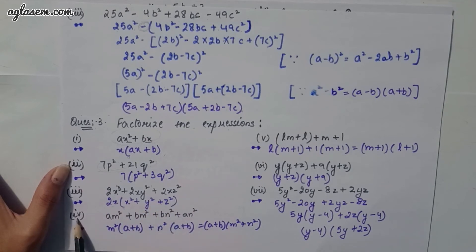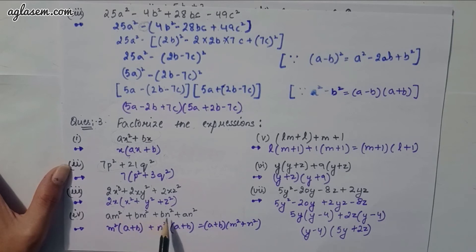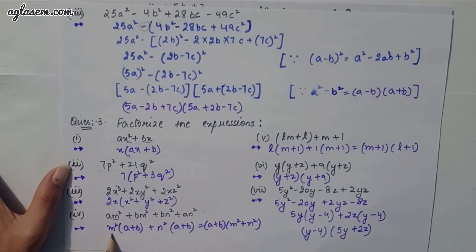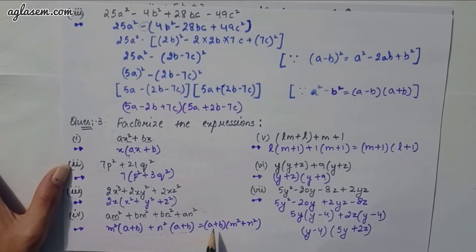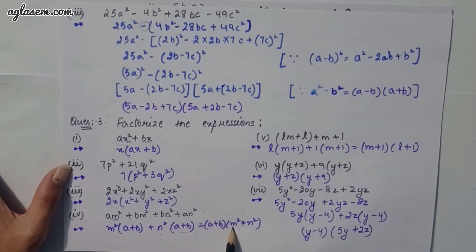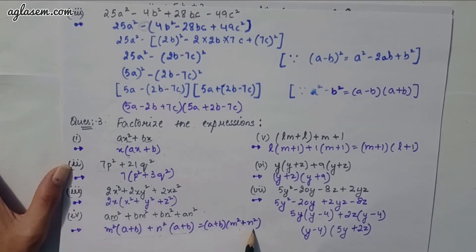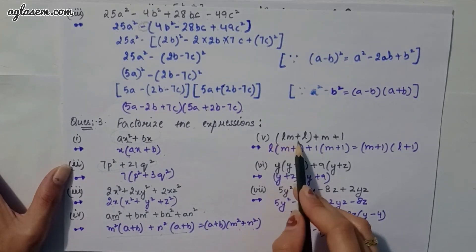Fourth part: am² + bm² + bn² + an². Group as m²(a + b) + n²(a + b) = (a + b)(m² + n²).